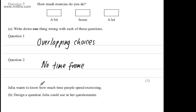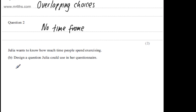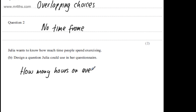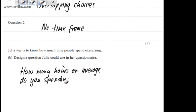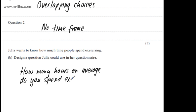We're now told Julia wants to know how much time people spend exercising. In part B, it says design a question Julia could use in her questionnaire. The question carries two marks. We could write: 'How many hours on average do you spend exercising each week?'